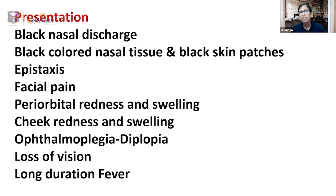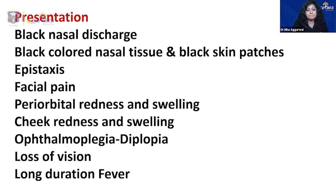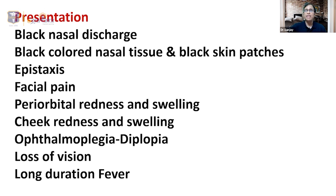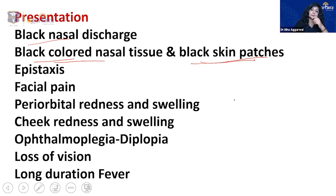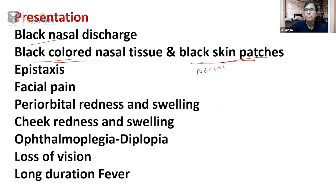Why is this disease called 'black fungus'? Look at the second presentation: black-colored nasal tissue and black skin patches. The fungus itself is not black — the name is a misnomer. It causes the tissue to turn black because of necrosis. Mucormycosis is a necrotizing disease. Why does it cause necrosis? This is a very important MCQ point.